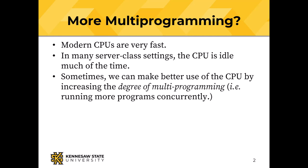Sometimes we can get better use out of that CPU by increasing the degree of multi-programming — how many programs are running concurrently at the same time. Remember when we talked about virtual memory, there is a constraint that we have to have enough real memory to hold the working set of each program that's running, or the system will be in that state called thrashing, where the OS is moving pages back and forth between real memory and disk, and very little actual work is getting done.